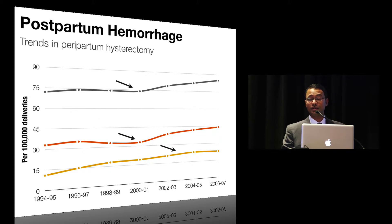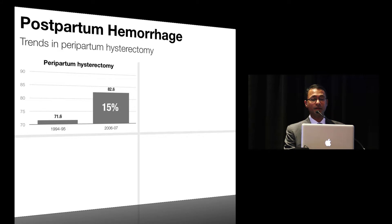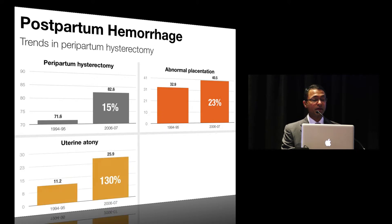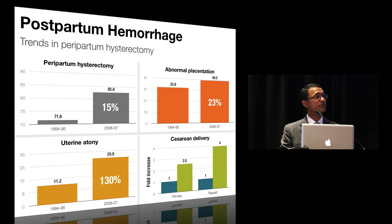The majority of this increase was triggered by two main events: abnormal placentation and uterine atony. Overall, there was a 15% increase in the incidence of peripartum hysterectomy per 100,000 deliveries. Hysterectomy in the setting of abnormal placentation increased by 23%, explained by an increasing proportion of delivering women with a prior cesarean delivery. Hysterectomy for uterine atony increased by 130%. The authors also provided strong evidence that an increased rate of cesarean delivery is responsible for a majority of cases — even a primary cesarean delivery was associated with a 2.5-fold increase in risk, and this risk increases four-fold with a repeat cesarean delivery.